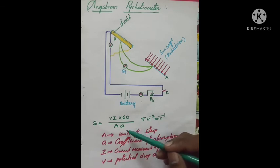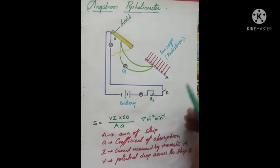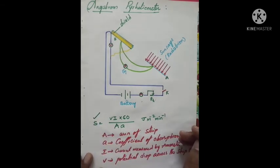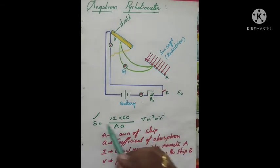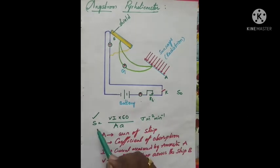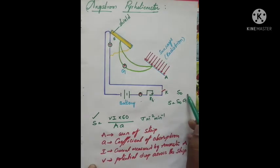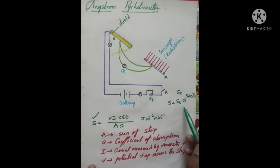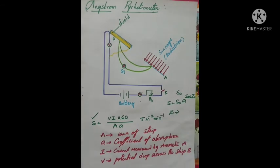The value of solar constant obtained at the surface of the earth must be corrected for absorption of solar radiation by the atmosphere. If S is the observed value of solar constant and S₀ is the actual value, the relation between them is: S = S₀ × a^(sec z), where z is the zenith distance of the sun.